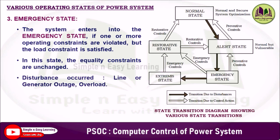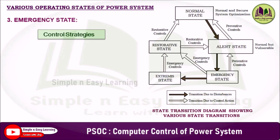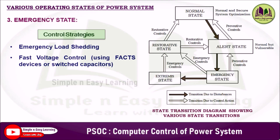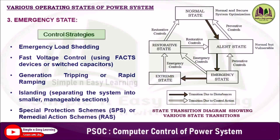In the emergency state, a disturbance has actually occurred — for example, line outage, generator outage, or overload. The system can return to the normal or alert state through corrective actions like disconnection of the faulted section or load shedding. Control strategies include emergency load shedding, fast voltage control using FACTS devices (such as STATCOMs, switched capacitors), generation tripping or rapid ramping, islanding operation (separating the system into smaller manageable sections), and special protection or remedial action schemes.